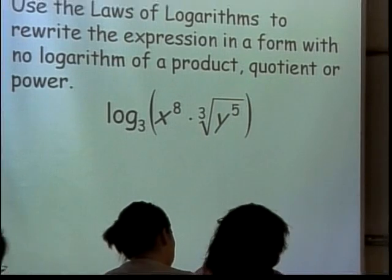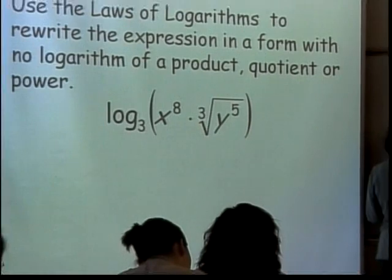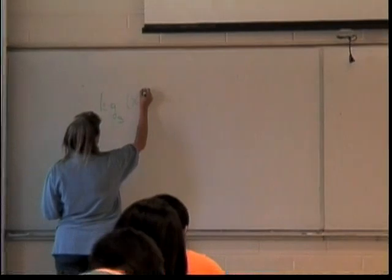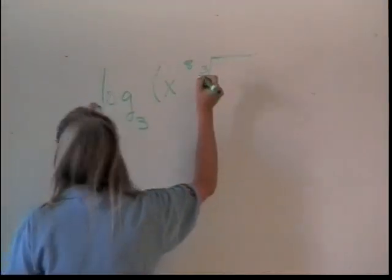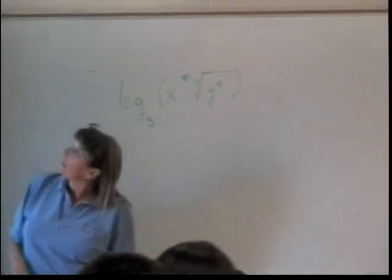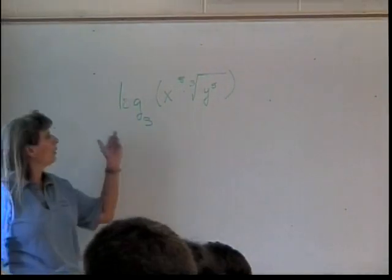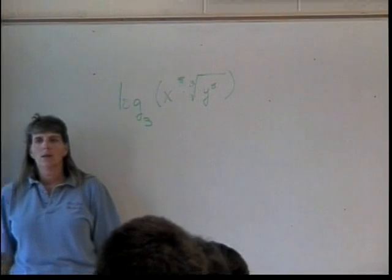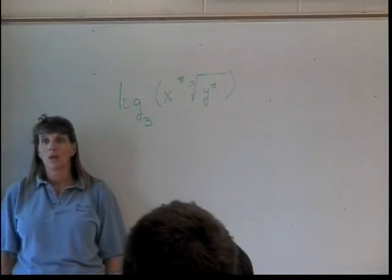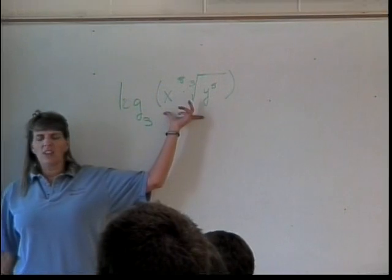So here's our first problem. We want to use the laws of logarithms to rewrite log base 3 of this expression, X to the 8th times the cube root of Y to the 5th, as a form where all our logarithms have no products, quotients, or powers in the argument. So any suggestions for how to start? Well, let's look at our argument. We'll start with the argument. What's the big thing that happens?